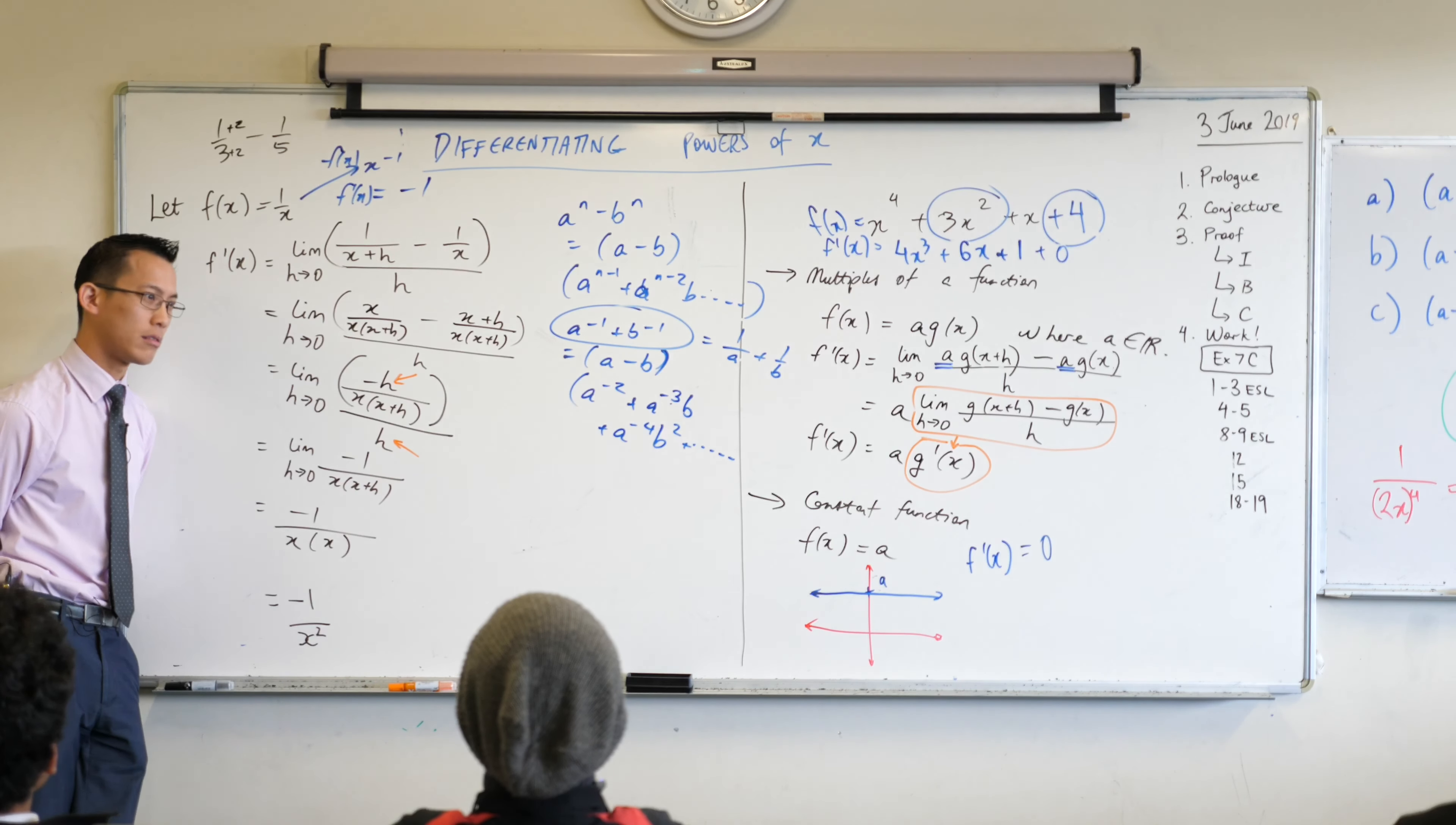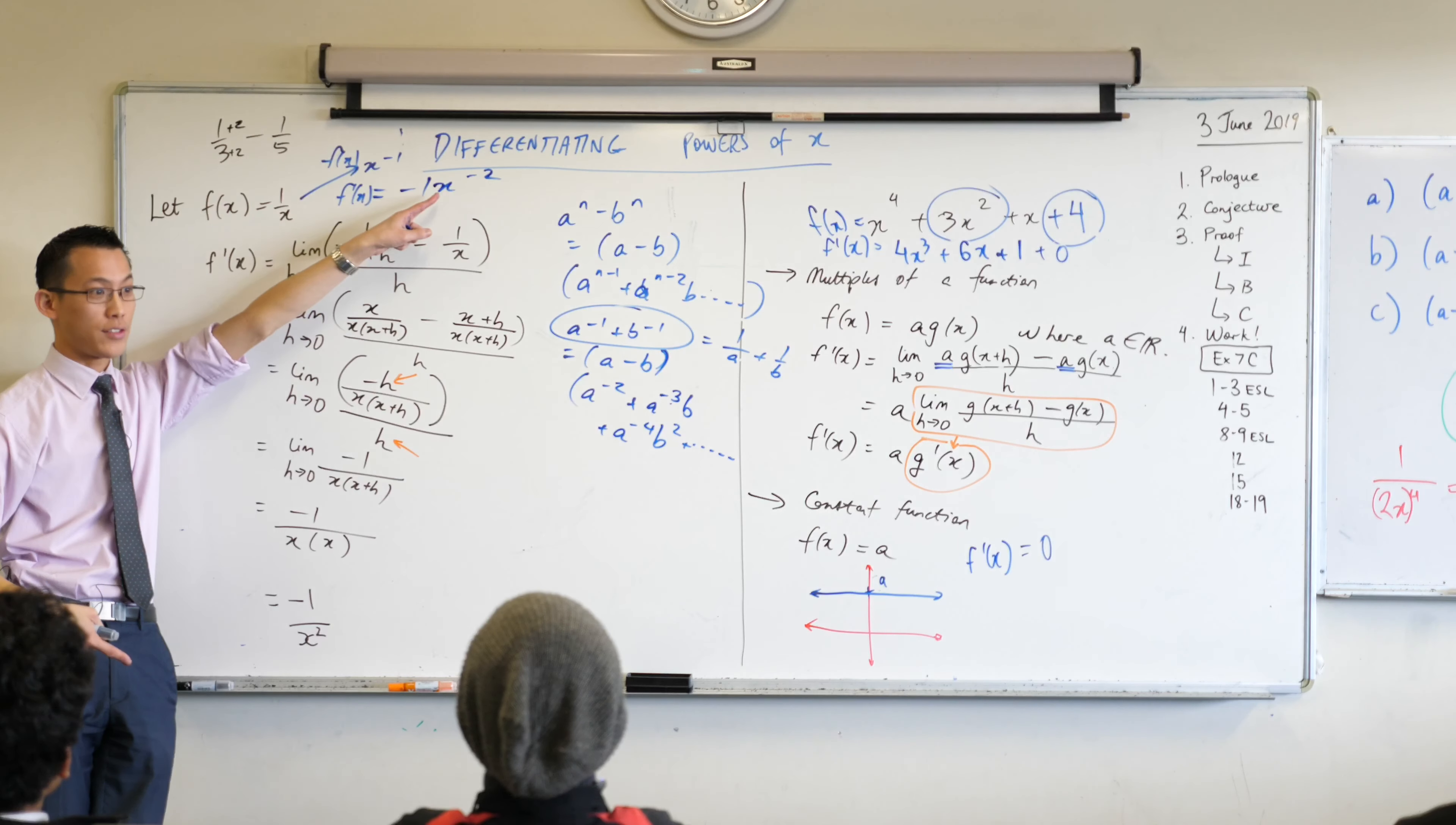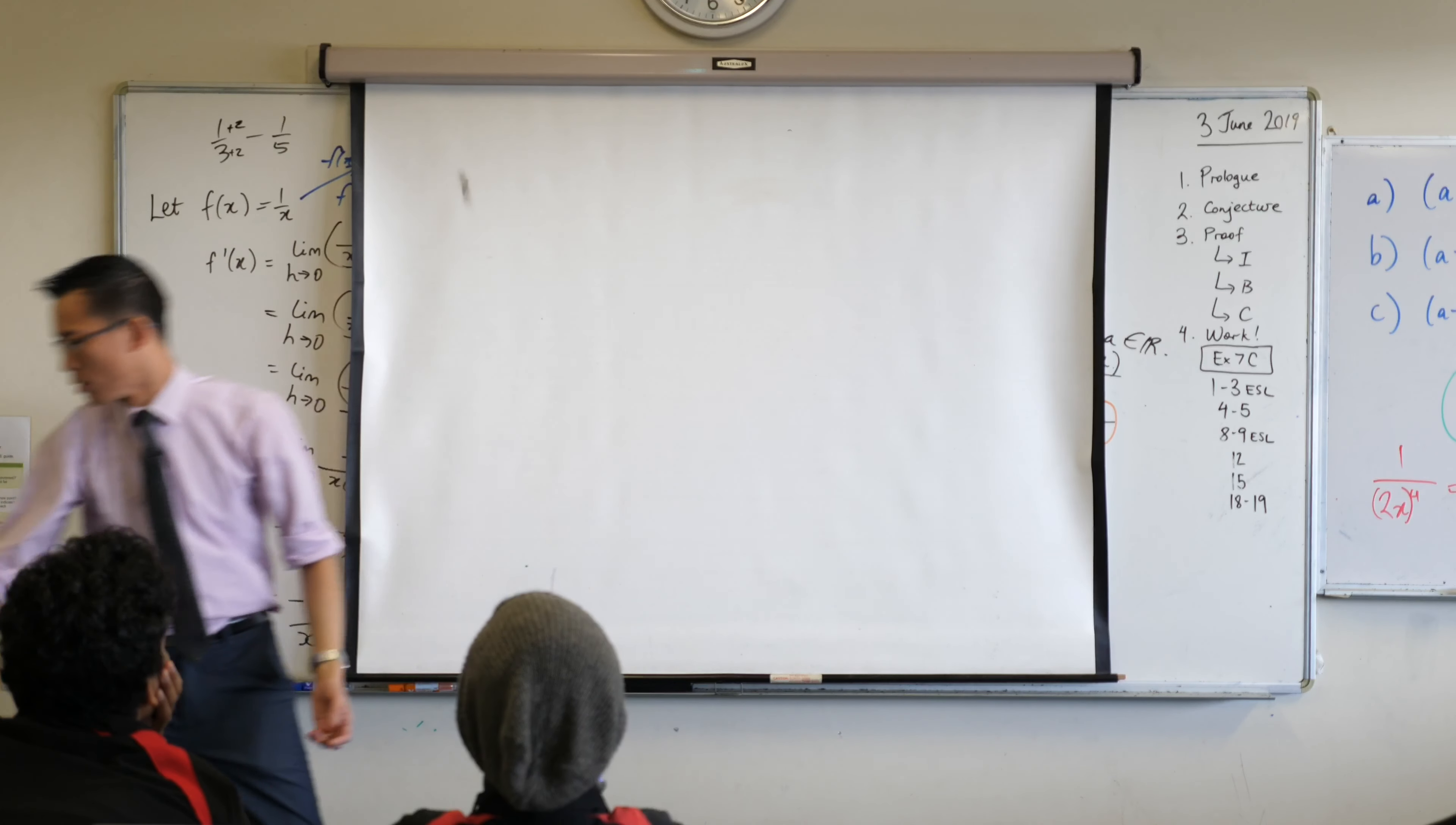What happens to the power? Minus one comes out the front, and then what happens to the power? It reduces by one. That's really sneaky. It's a negative, so when you reduce it by one, negative one turns into negative two. Just look at that closely. Look at that. Does that look familiar? It does.